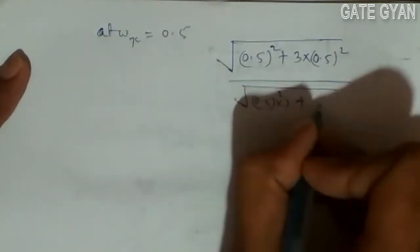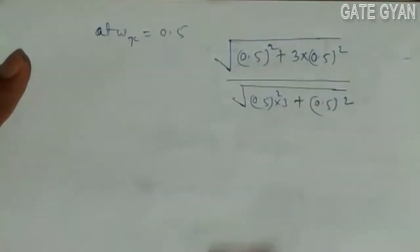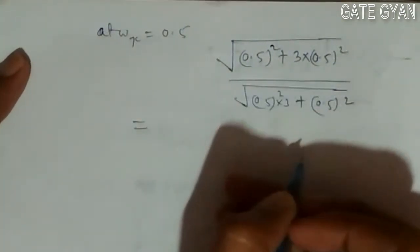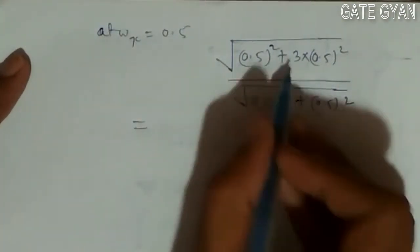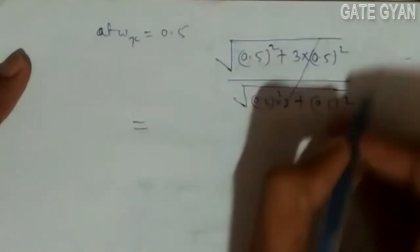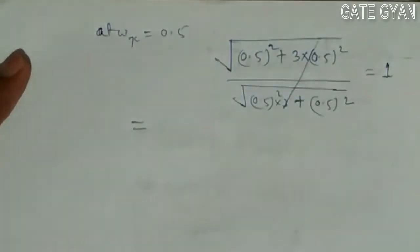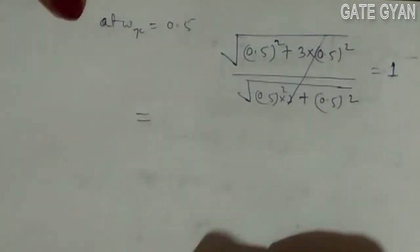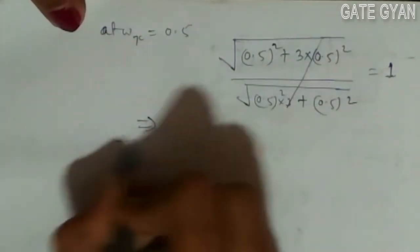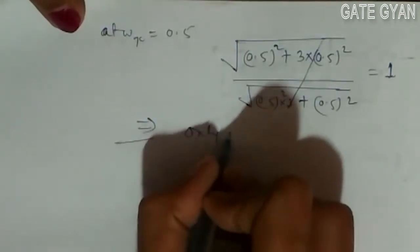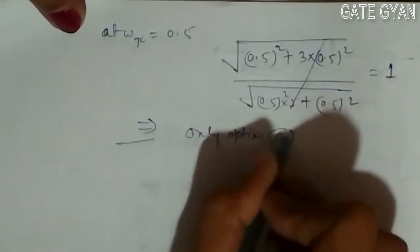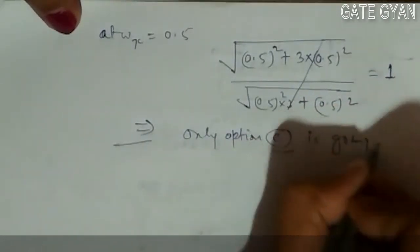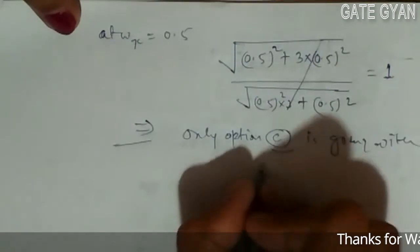On simplifying, these two terms are the same, so they cancel, and the gain of the system becomes 1. Therefore, only option C satisfies the given data.